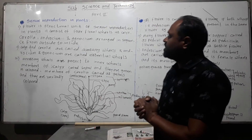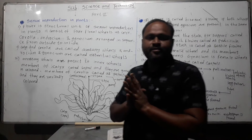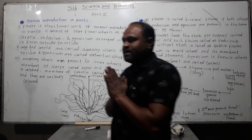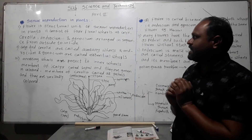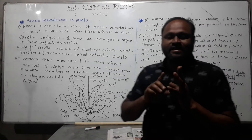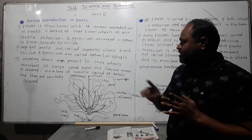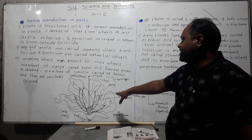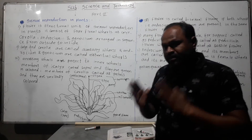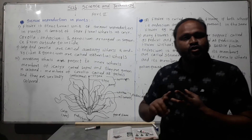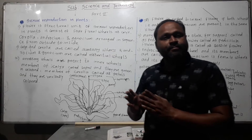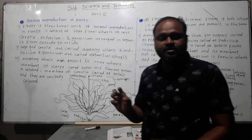Today we are going to start the topic: sexual reproduction in plants. The main reproductive organ is a flower. Flower is the structural unit of sexual reproduction in plants. It consists of four floral whorls: calyx, corolla, androecium, and gynoecium. Androecium is the male part and gynoecium is the female part.